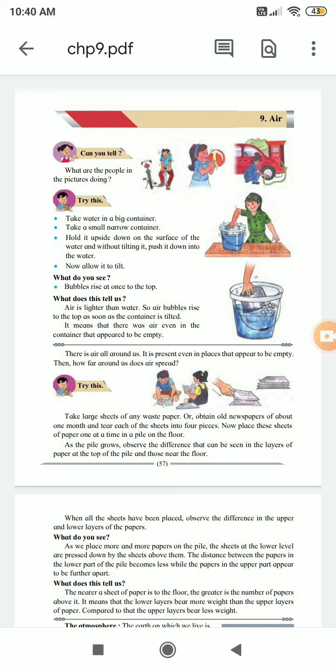Take large sheets of any waste paper. Or obtain old newspaper of about one month and tear each of the sheets into four pieces. Now place these sheets of paper one at a time in a pile on the floor. As the pile grows, observe the difference that can be seen in the layers of paper at the top of the pile and those near the floor.